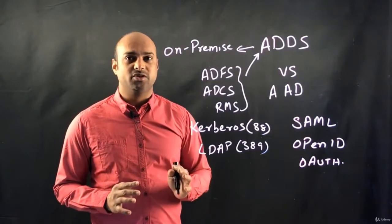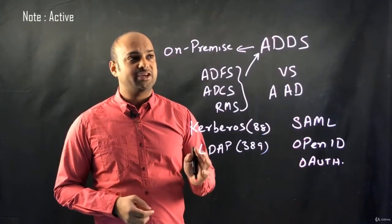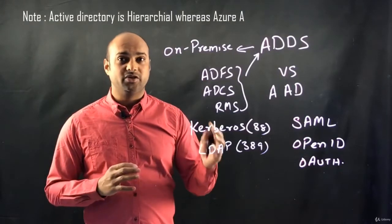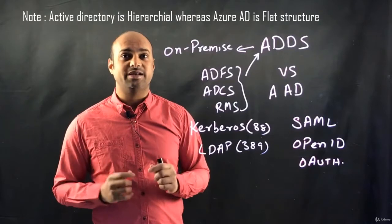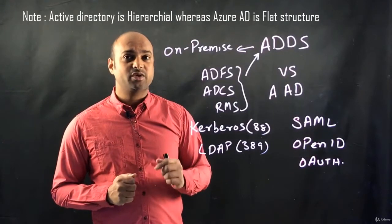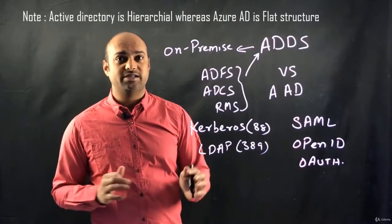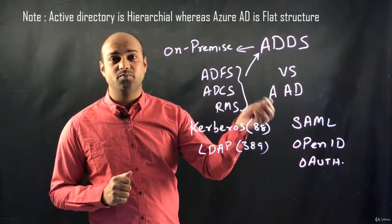These are the main concepts here. Keep in mind that on-premise Active Directory is a hierarchical tree structure. You can create users and groups inside an organization unit. Azure Active Directory is a flat structure, so you do not have any organization unit structure. You cannot create group policies as well.